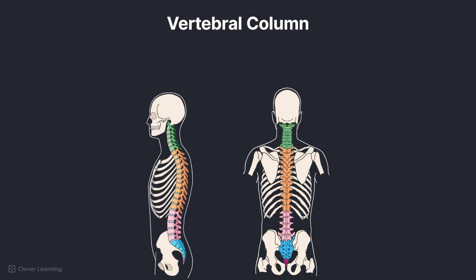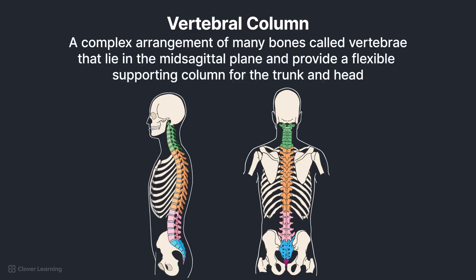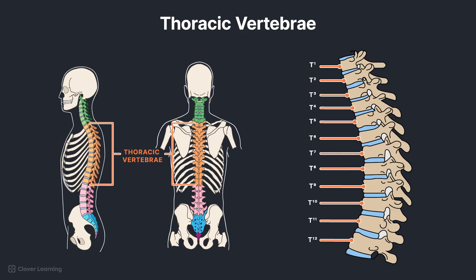Now let's apply these terms to identify the corresponding anatomy. The vertebral column, also called the spine or spinal column, is a complex arrangement of many bones called vertebrae that lie in the mid-sagittal plane and provide a flexible supporting column for the trunk and head. It also transmits the weight of the trunk and upper body to the lower limbs, and forms the posterior or dorsal aspect of the bony trunk of the body. The vertebral column is divided into five sections, each with distinct vertebrae. The second section contains the 12 thoracic vertebrae, which will be the focus of this lesson.